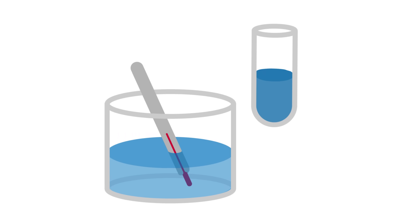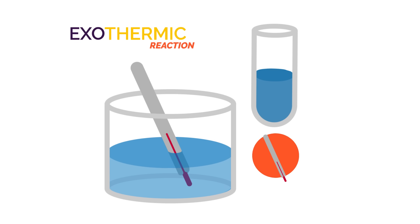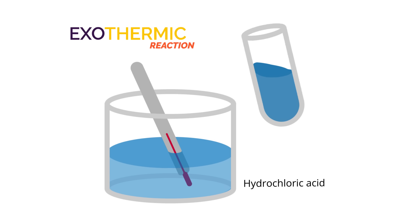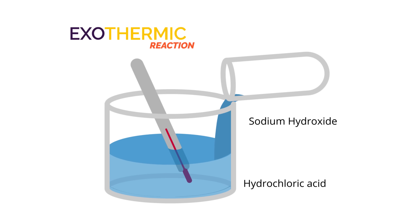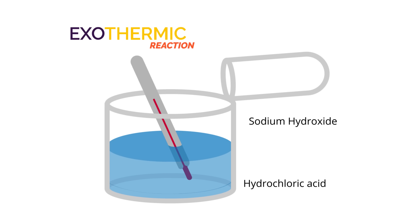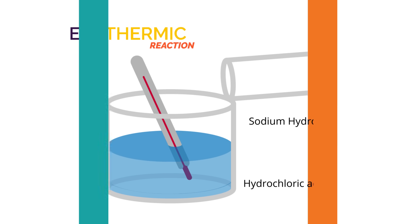It is easy to detect exothermic reactions — just get your thermometer and see if the temperature increases. Watch the hydrochloric acid and sodium hydroxide solution being mixed and see how the thermometer reading increases. Most chemical reactions are exothermic because heat is given out.